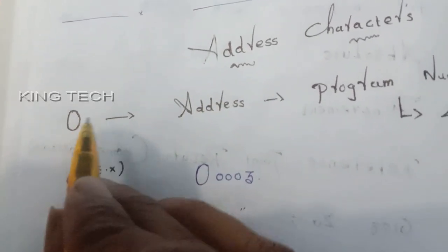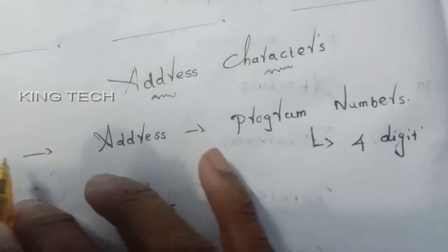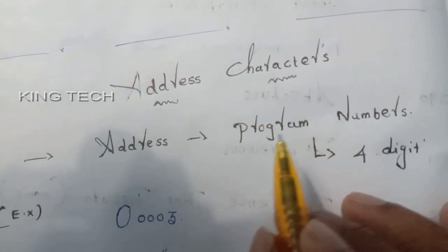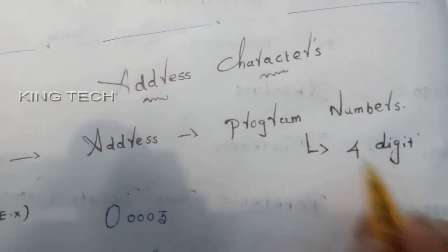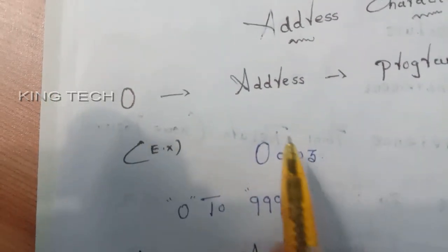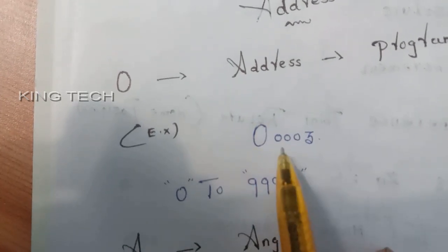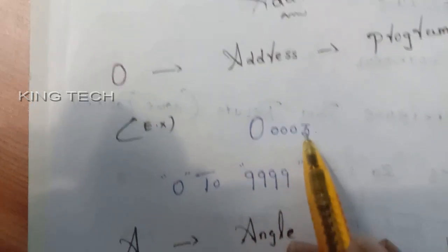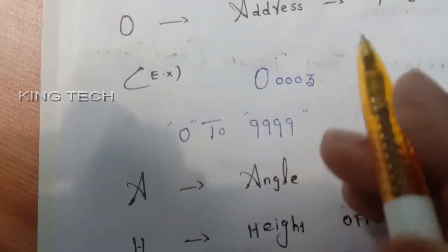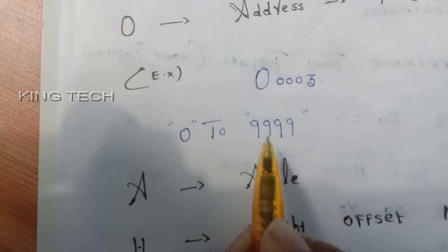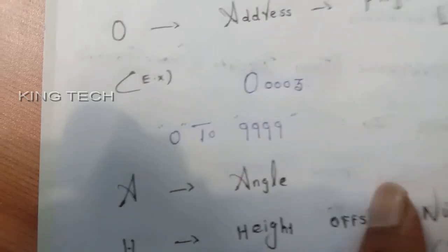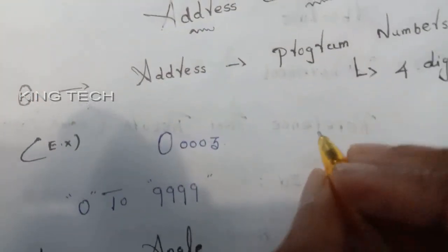Address, program number. You can save four digits number. For example, we can explain O, four digits number 0003. That's this number.